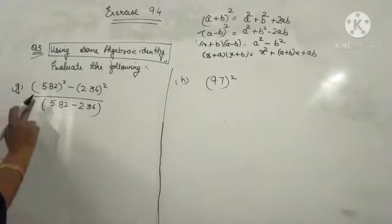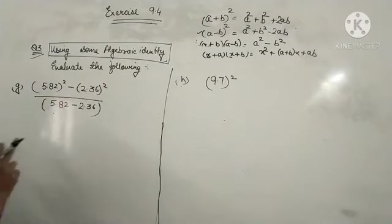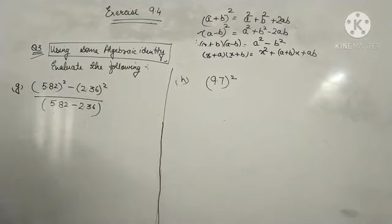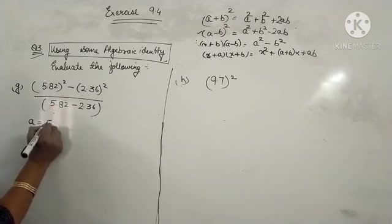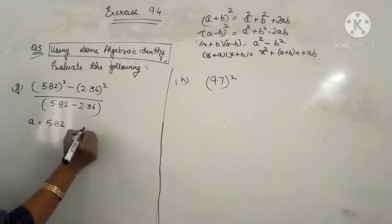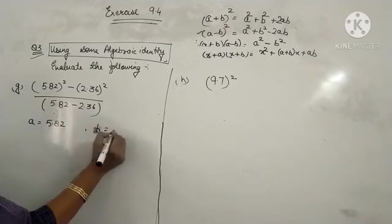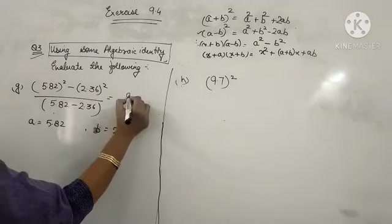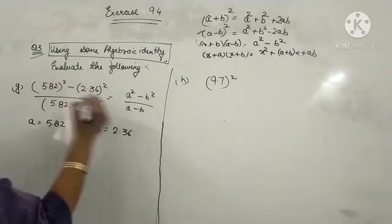In G part, it is given 5.82 square minus 2.36 square upon 5.82 minus 2.36. If we take 5.82 as A and 2.36 as B, so you can compare it as A square minus B square upon A minus B.